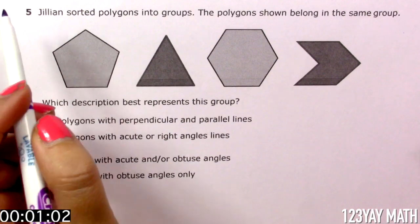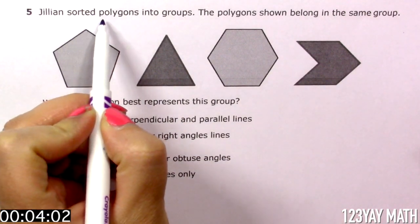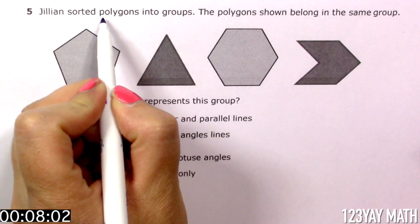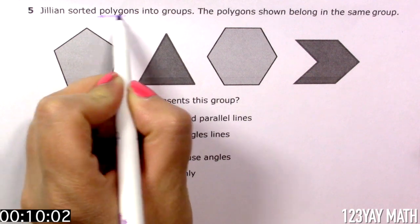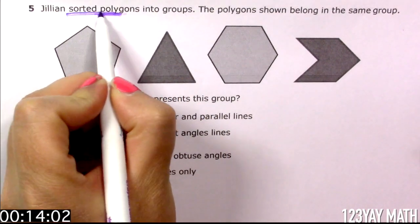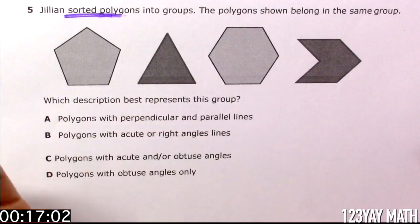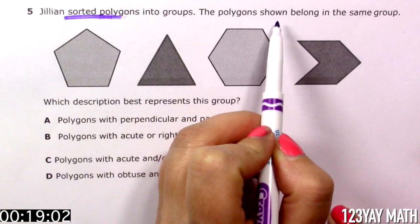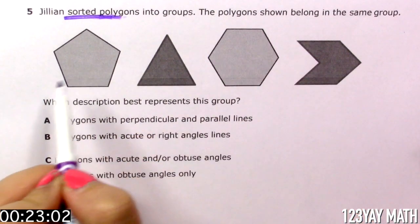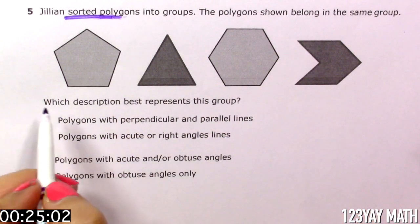Awesome! Let's read it together. Jillian sorted polygons into groups. Okay, polygons - you know that poly means many. Into groups. So she sorted them, which means like classify, put in groups. The polygons shown belong in the same group. So we have all these polygons.